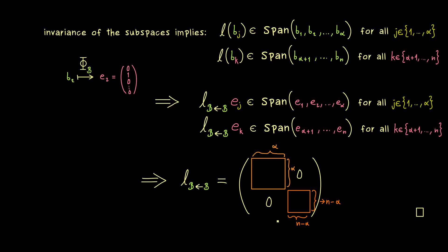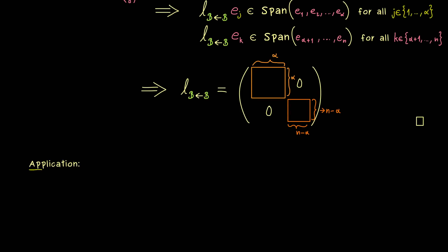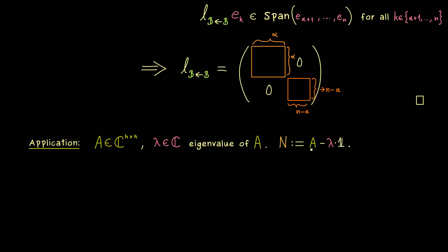As I told you at the beginning, we can immediately apply this to our Jordan normal form proof. There we have our generalized eigenspaces, which are invariant under A. We have a complex square matrix A and an eigenvalue lambda of A. We define the matrix N as A minus lambda identity matrix. We have a generalized eigenspace given as the kernel of N to the power d, where d is the fitting index. Recall that the kernel and the range of N to the power d are invariant under A.